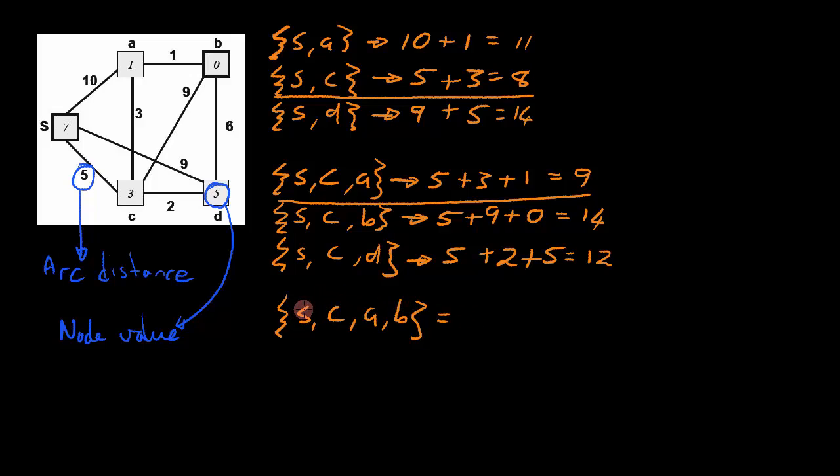we add the arc distance from S to C. The arc distance from S to C is 5. We add the arc distance from C to A, which is 3. We add the arc distance from A to B, which is 1. And then, obviously, we need to add the node value of B. In this case, it is 0. And that gives us a total distance of 9.